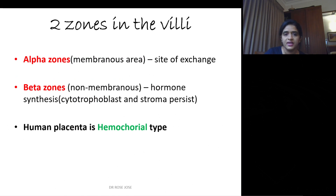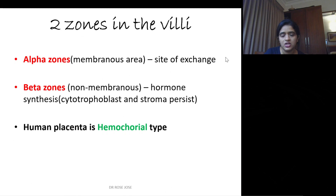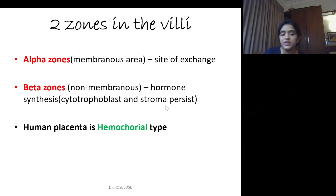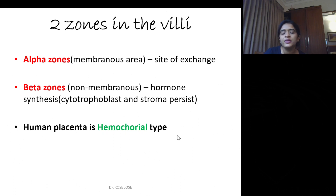There are mainly two zones in the villi: alpha zone and beta zone. Alpha zone is mainly membranous and that is the region where exchange occurs. Beta zone is non-membranous and it is meant for hormonal synthesis — here the cytotrophoblast and stroma persist. Human placenta is said to be hemochorial.